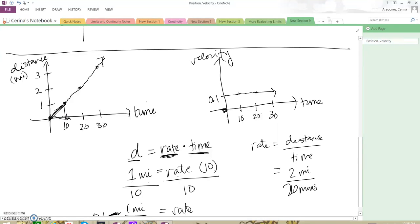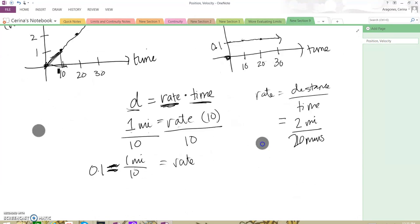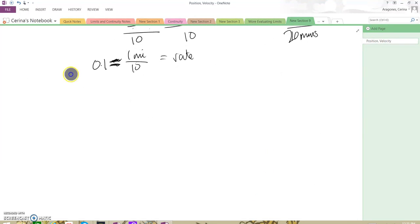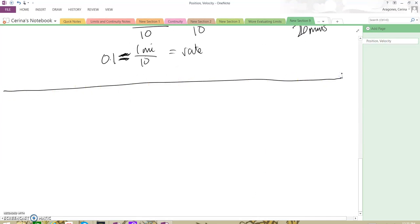Using our distance graph, we can figure out what our velocity graph looks like. Of course, we can do this the other way as well. But let's do a more complicated distance graph first, one we had in our problems, to help us get a better understanding of the relationship.